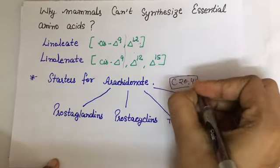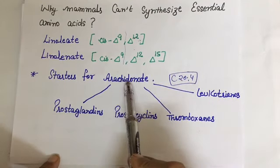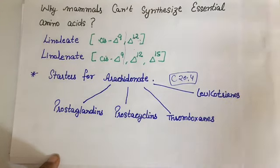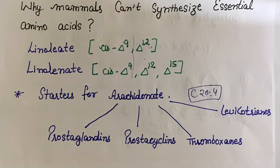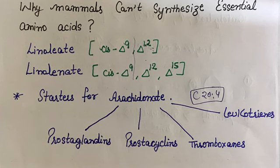And this arachidonate has four double bonds and 20 carbons. So arachidonate is the precursor for prostaglandins, prostacyclins, thromboxanes, and leukotrienes. And these compounds act as local hormones.